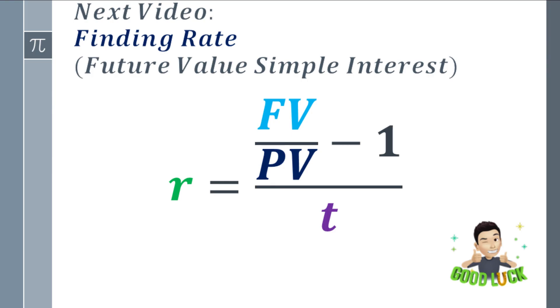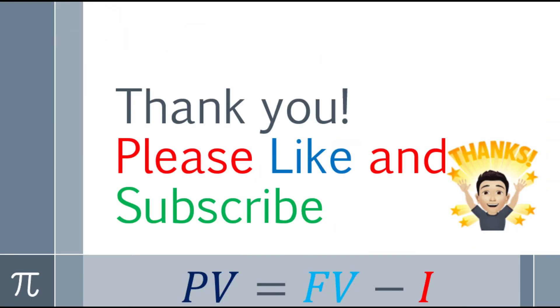Our next video will be about finding the rate in future value simple interest. So we have the formula: rate is equal to future value over present value. The answer minus 1. And that, over the time. If you would like to comment or suggest another Math in Language video, or if you have assignments, please comment down below. Again, this is James, your math and language instructor. Please like and subscribe. And also click the bell notification so you're updated on new videos from Math in Language. See you next time. Bye-bye. Thank you.